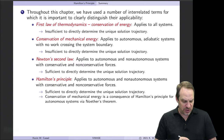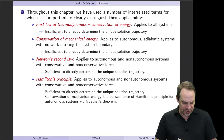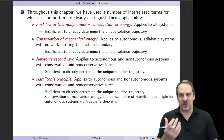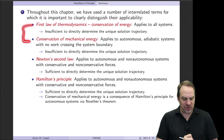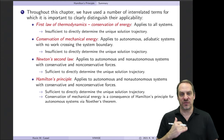Newton's Second Law applies to autonomous and non-autonomous, conservative as well as non-conservative forces — basically anything that doesn't include relativistic effects. It is sufficient to directly determine the unique solution trajectory. F equals ma will tell me what happens to a particular system given initial conditions. Hamilton's Principle likewise applies to autonomous and non-autonomous systems, conservative and non-conservative forces, and is also sufficient to directly determine the unique solution trajectory. Whereas conservation of energy alone is not enough, both Newton's Second Law and Hamilton's Principle are.